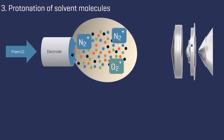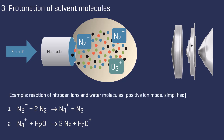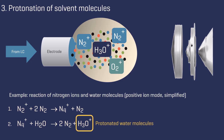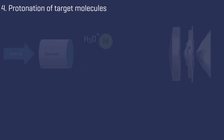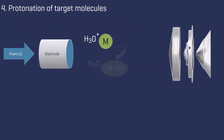The ionized gas molecules initiate a series of reactions with other gas and solvent molecules. To illustrate this process, we will use nitrogen ions interacting with water molecules in the positive ion mode as an example. The important outcome of this reaction cascade is the formation of protonated water molecules. In the next step, protons are transferred from the solvent to the target molecules.